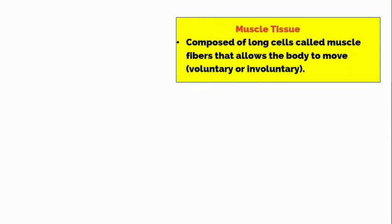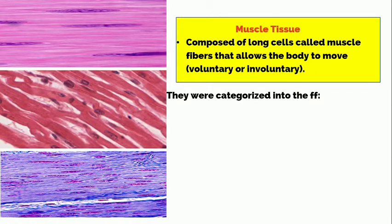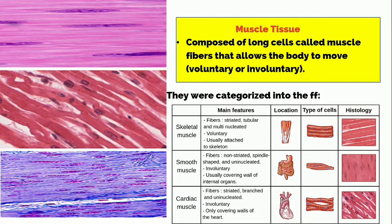Muscle cells are composed of long cells called muscle fibers that allow the body to move voluntarily or involuntarily. They are categorized as follows: skeletal muscle is striated, tubular, and multinucleated — voluntary and usually attached to the skeleton. Smooth muscle is non-striated, spindle-shaped, and uninucleated — involuntary and usually covering the wall of internal organs.